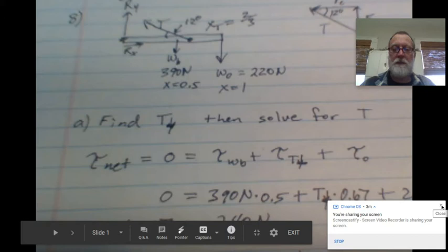And if we look here, we have 390 times 0.5 and this should be a negative 390, but it doesn't matter. The math will work out. And this is a perpendicular force times 0.67. And this number I cut off, but it's 220 newtons times one.